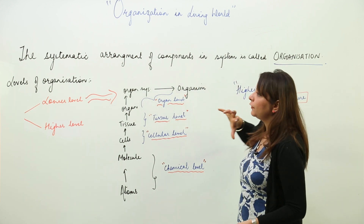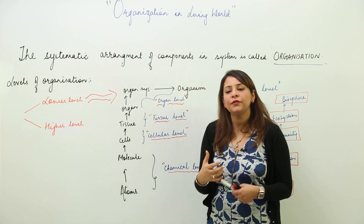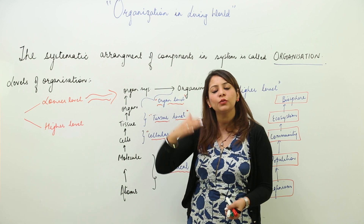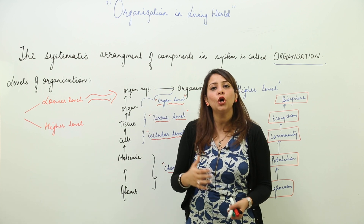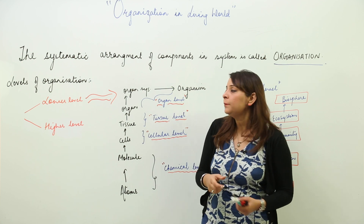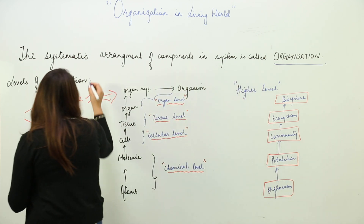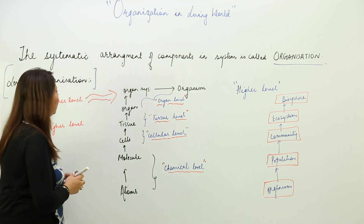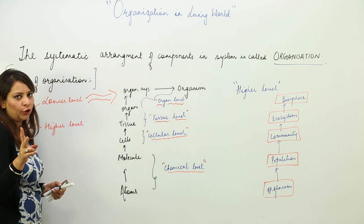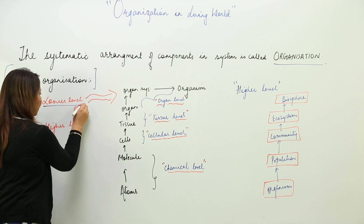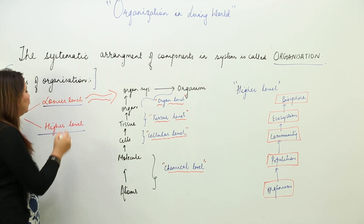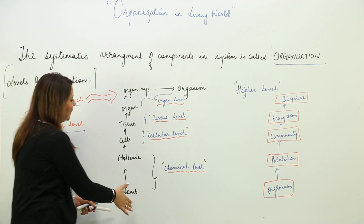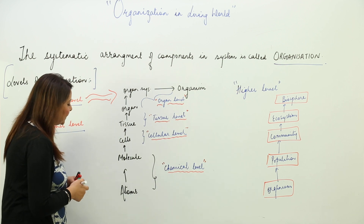If we try arranging the different components in a hierarchy, from a lower level to a higher level, we come across many levels. When we look at the levels of organization, we can have two types: one is the lower level and the other is the higher level. We'll start with the lower level organization.